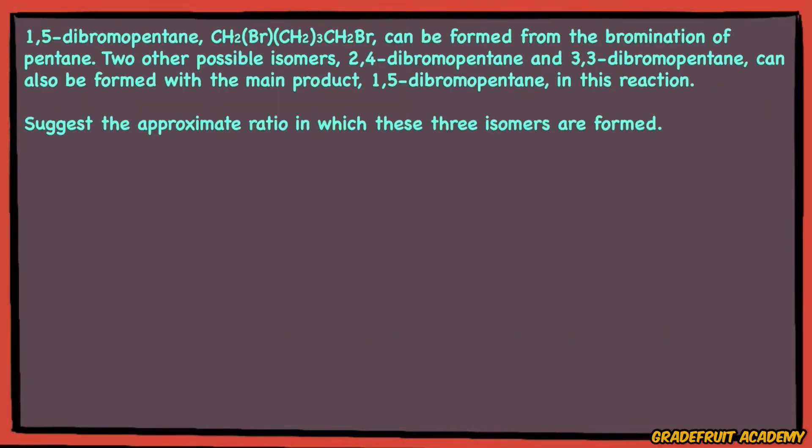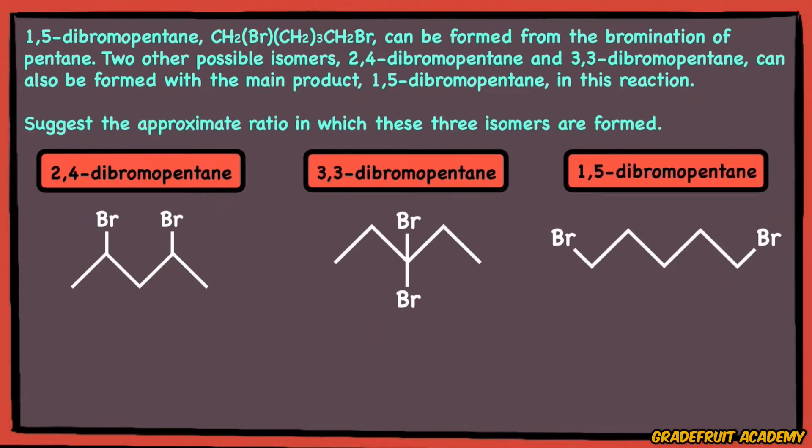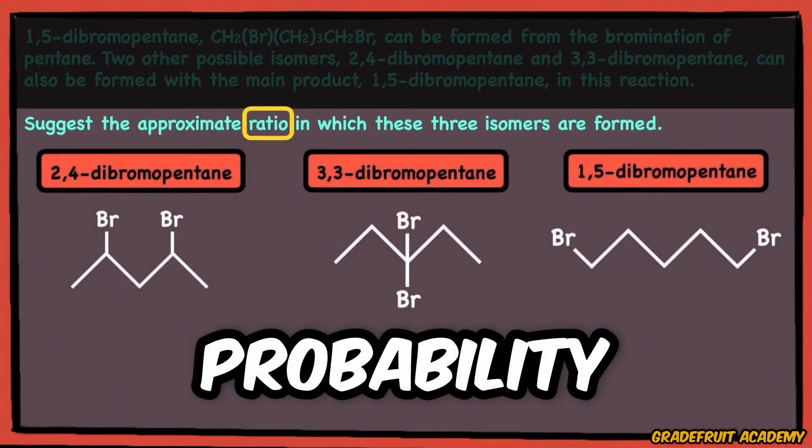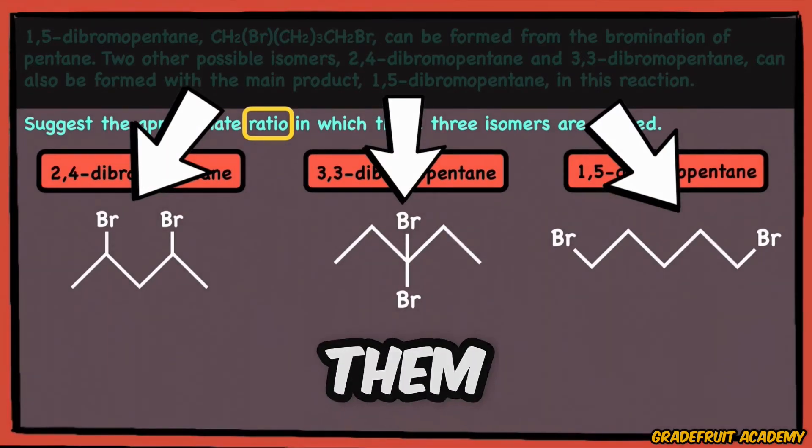Firstly, I'll draw out the three isomers in their skeletal formula. You can also draw them out in their full displayed formula, but I recommend skeletal because it saves you time in exams. When the question asks for the ratio of these three isomers, they're asking for the probability of these three isomers forming, aka how likely each of them are formed.